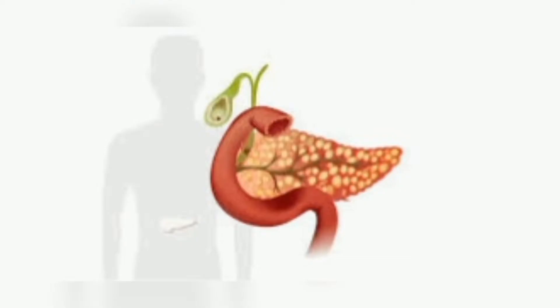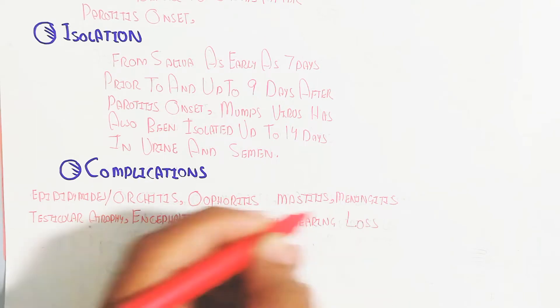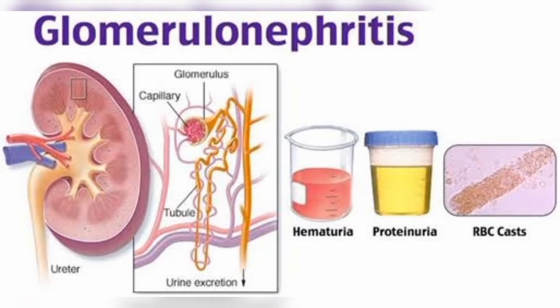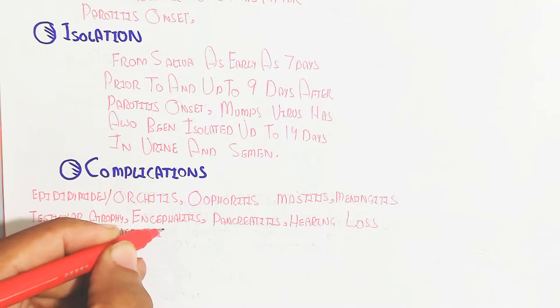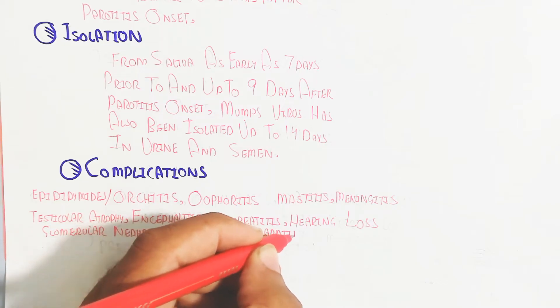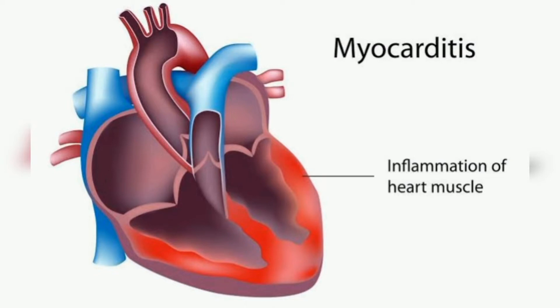On the other hand, pancreatitis means inflammation in the pancreas and hearing loss. Glomerulonephritis will lead to hematuria and proteinuria and RBC casts, which is the result due to glomerulonephritis after diagnosis. Arthritis can be osteoarthritis or rheumatoid arthritis, also a complication. And myocarditis means inflammation of the heart muscle.